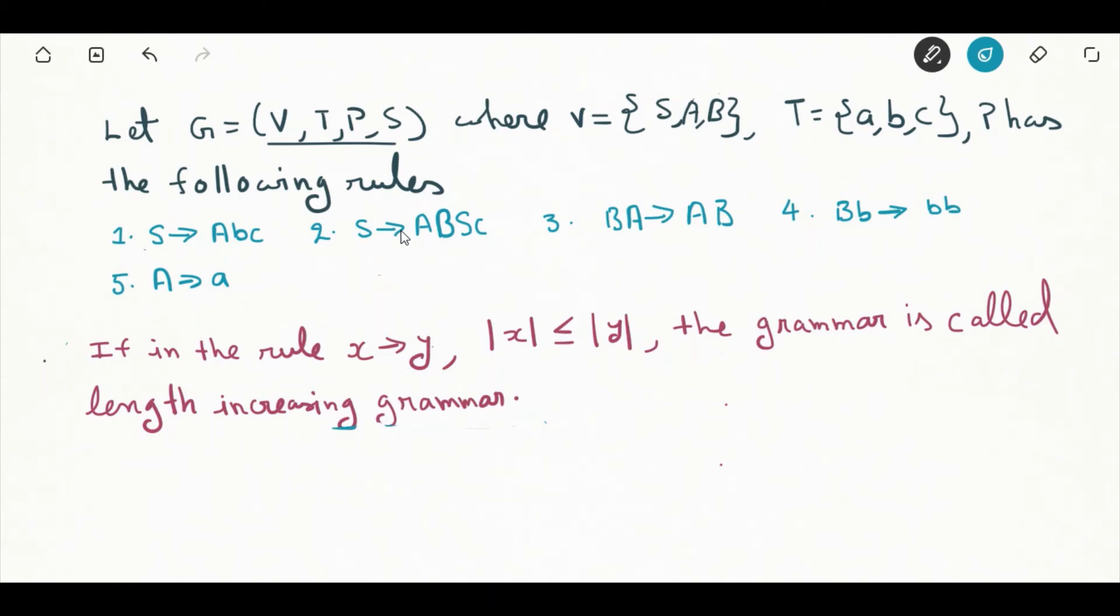Now if you closely look at this production x is rewritten as y, if this is the rule and length of x is less than or equal to length of y, then that grammar is called length increasing grammar.